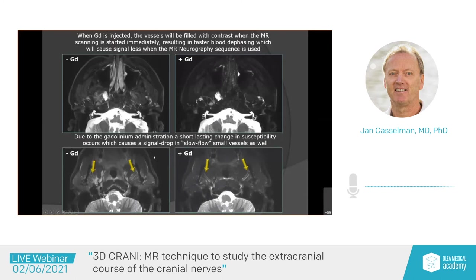First of all, you need gadolinium. This is the same patient, same slice, same moment — without gadolinium prior to injection. I want to see my nerves here but I can't see them; there is a vessel there. If I inject gadolinium, look at the background, look at the muscles — they get dark. I suppress the background by injecting.